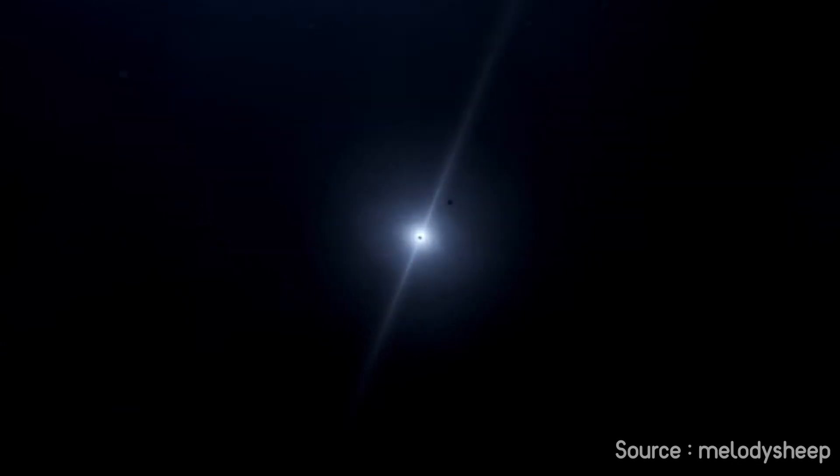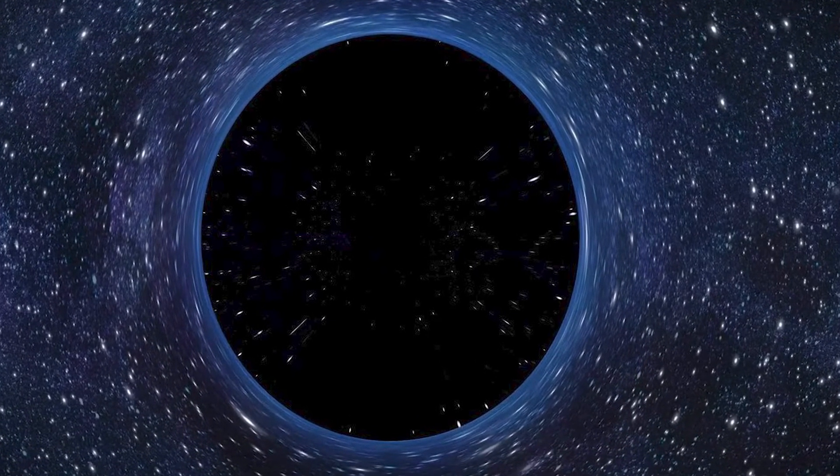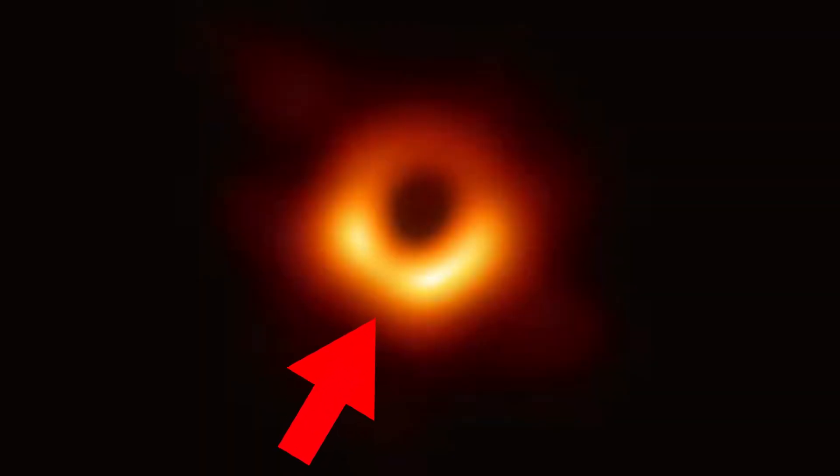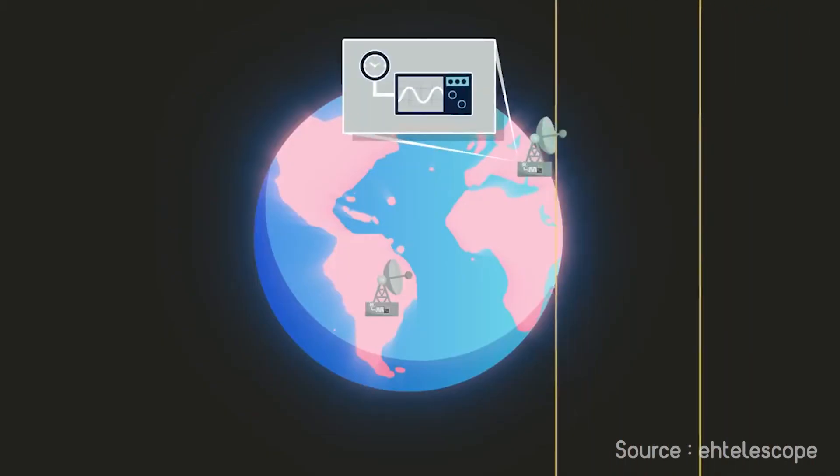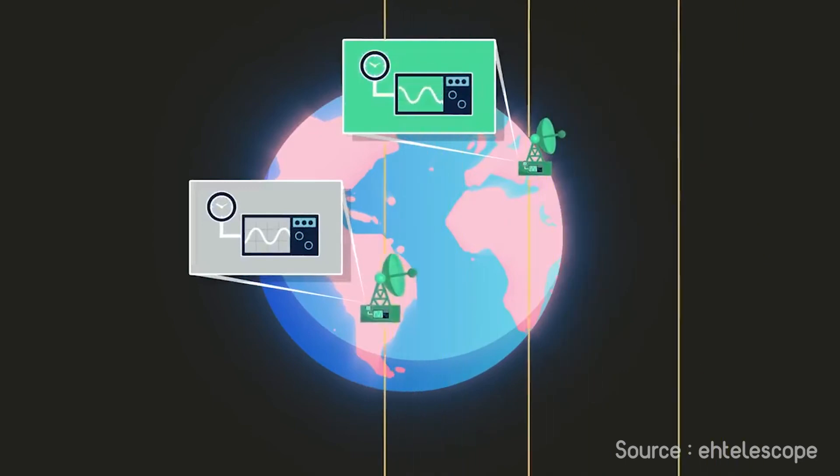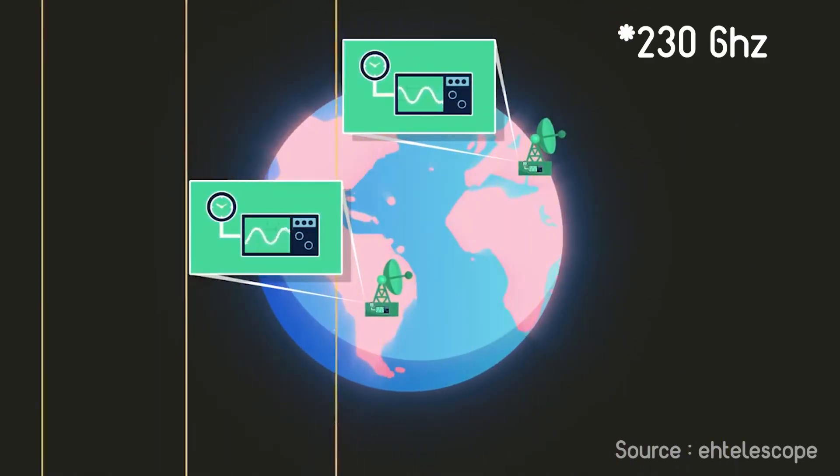Black holes don't emit light, but in the image, the ring around it is lightened up due to gas falling into the event horizon. The Event Horizon Telescope captured an image of radiation from this surrounding gas at a frequency of 230 gigahertz, and all this image data is stored in petabytes of storage using computer programs.